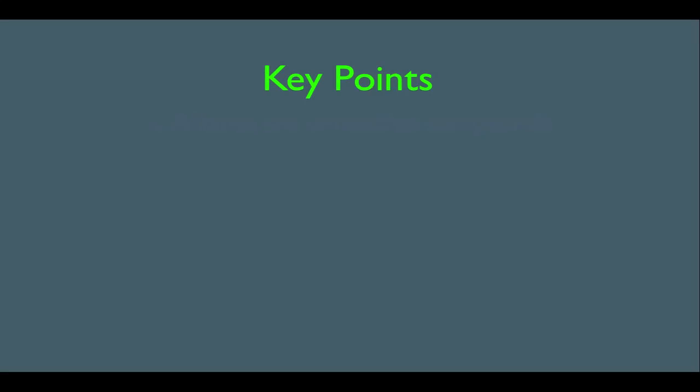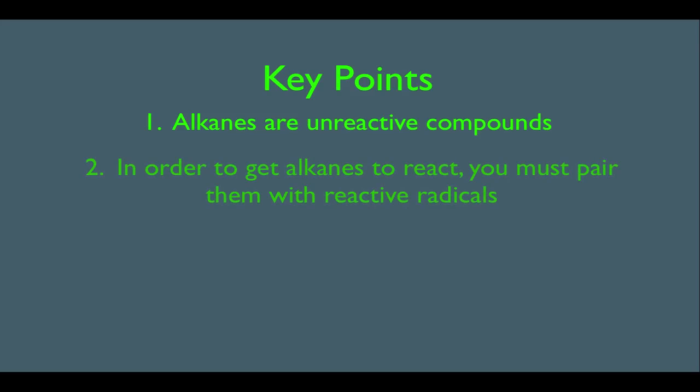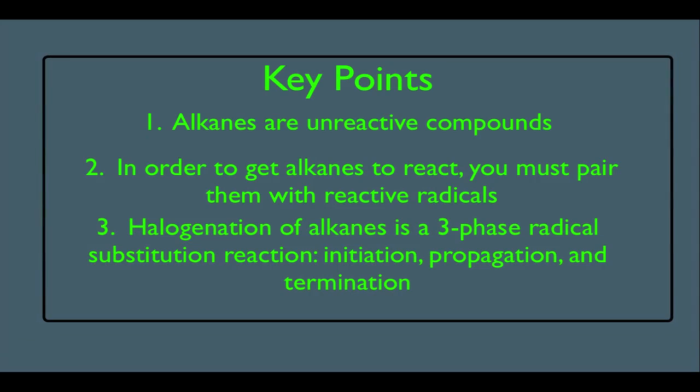In this online lecture, we're going to discuss how alkanes react via radical reactions. Let's look at our key points first. Number one, alkanes are unreactive compounds in general. Number two, in order to get alkanes to react, you must pair them with reactive radicals. And number three, halogenation of alkanes is a three-phase radical substitution reaction which involves initiation, a propagation step, and a termination step.